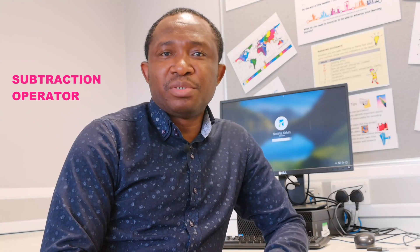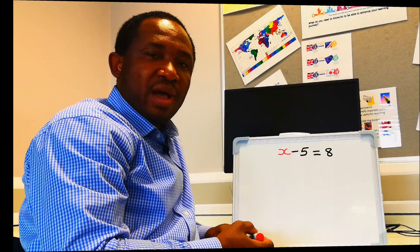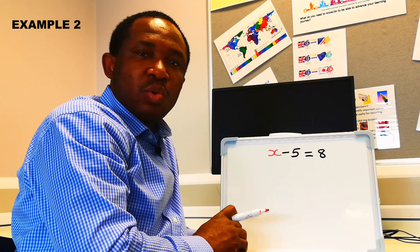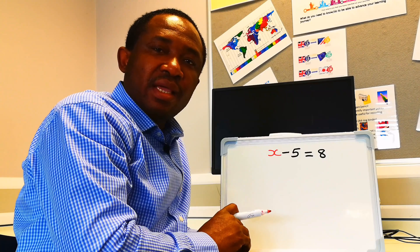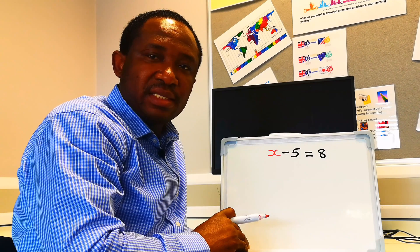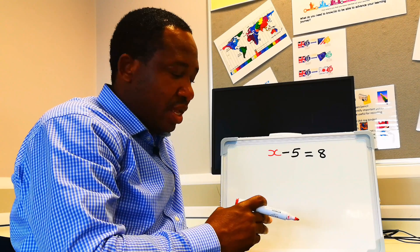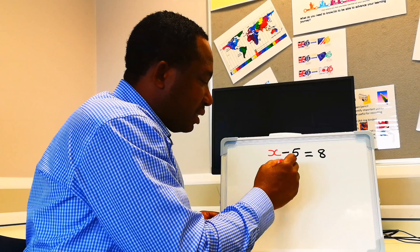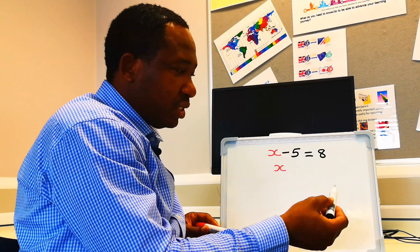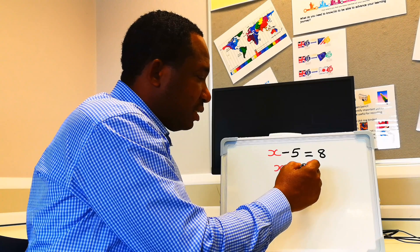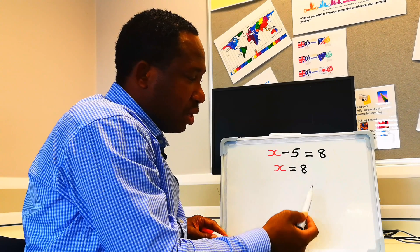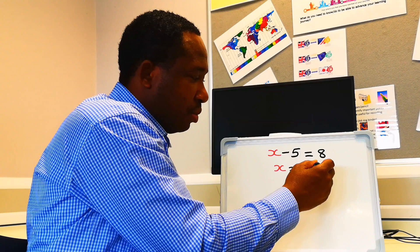Next, let's consider the subtraction operator separating variables in a linear equation. We have x minus 5 equals 8. Our aim here is to isolate x — x will be on one side of the equal sign. We are going to keep x on this side, and on the other side we are going to have 8. Minus 5 will move across this equal sign and become plus 5.